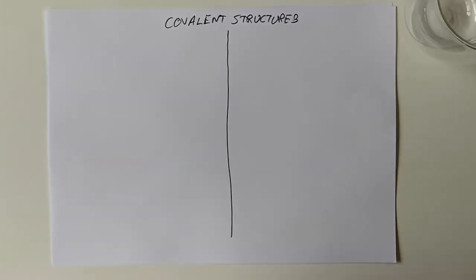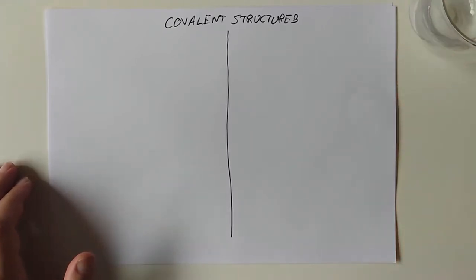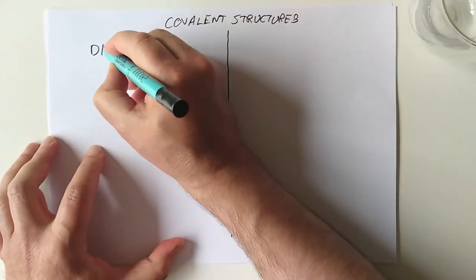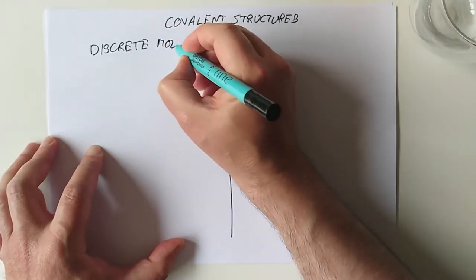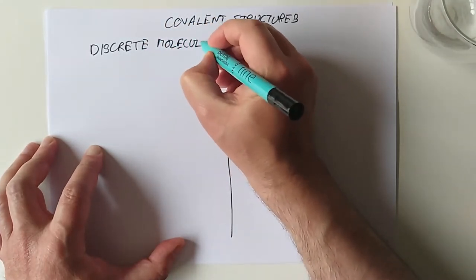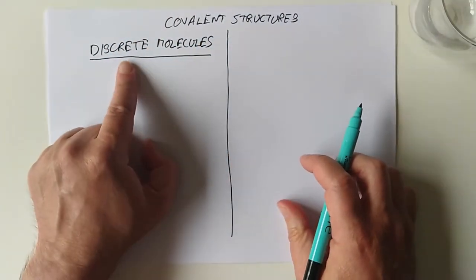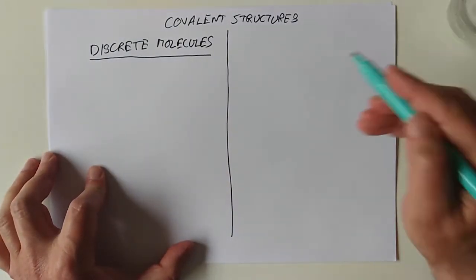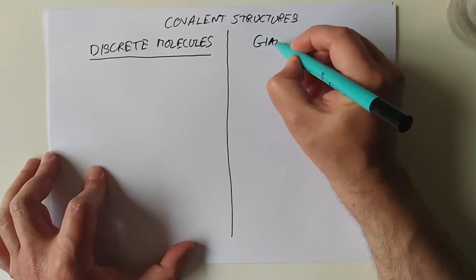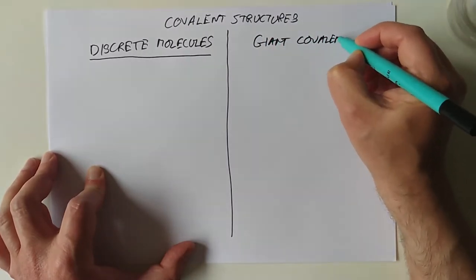And we're back. Covalent structures. Covalent structures can be one of two types. The SQA are using these terms, so we will also use these terms so you come across them in exam questions, you know what they mean. You can have type 1, which are called discrete molecules. That does not mean they keep a secret. Discrete in this context means they are separate from each other. The other option is a giant covalent network.